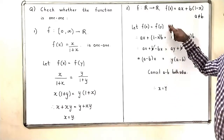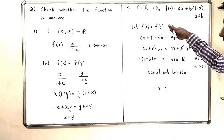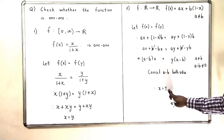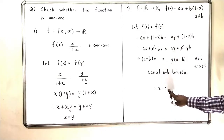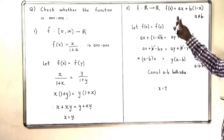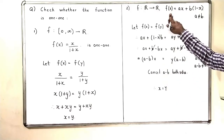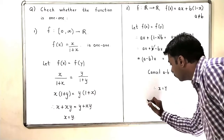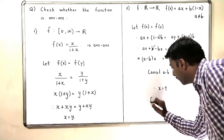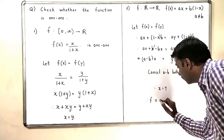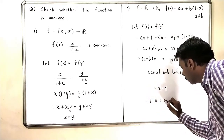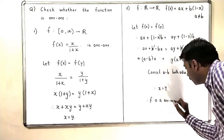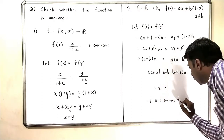We started with f(x) = f(y) and concluded that x = y. So this means the given function is a one-to-one function. Therefore, f is a one-to-one function.